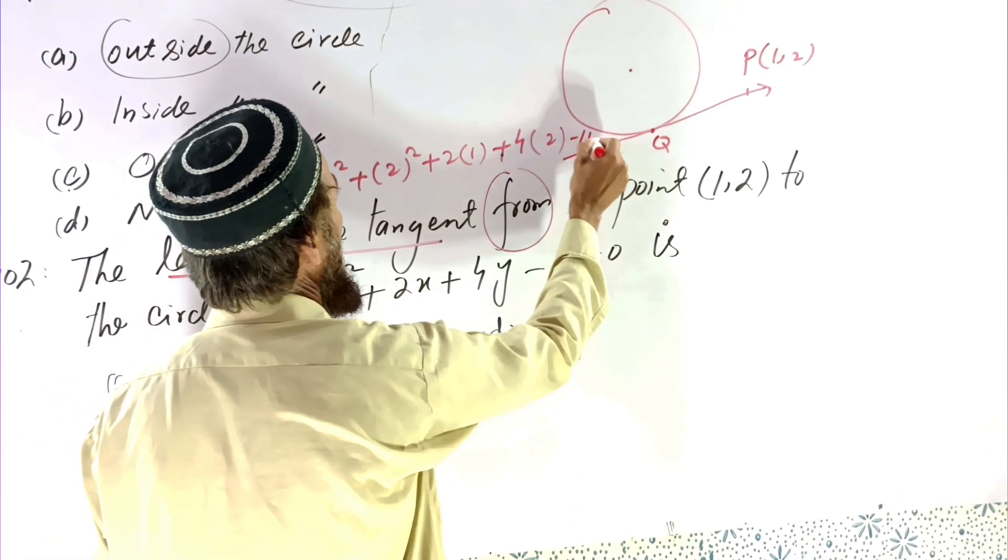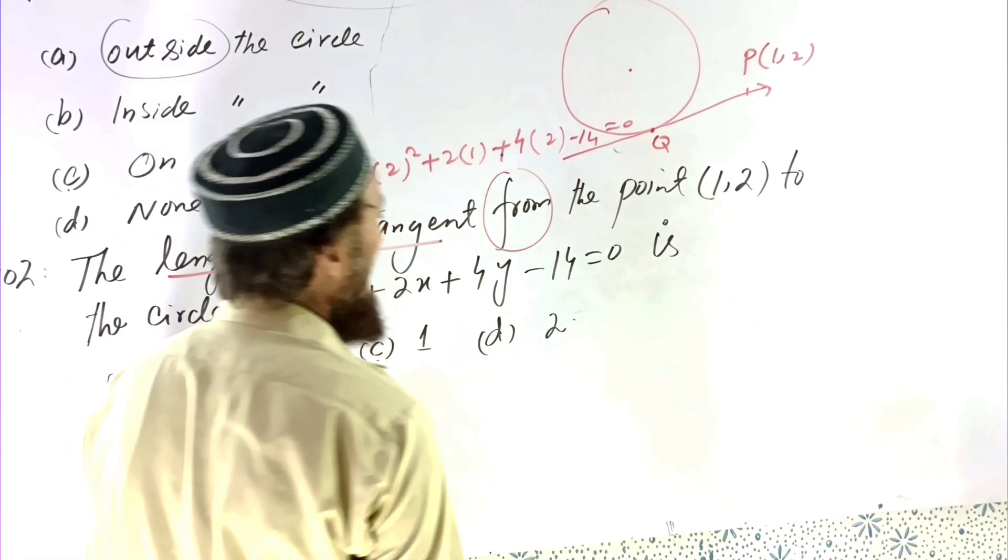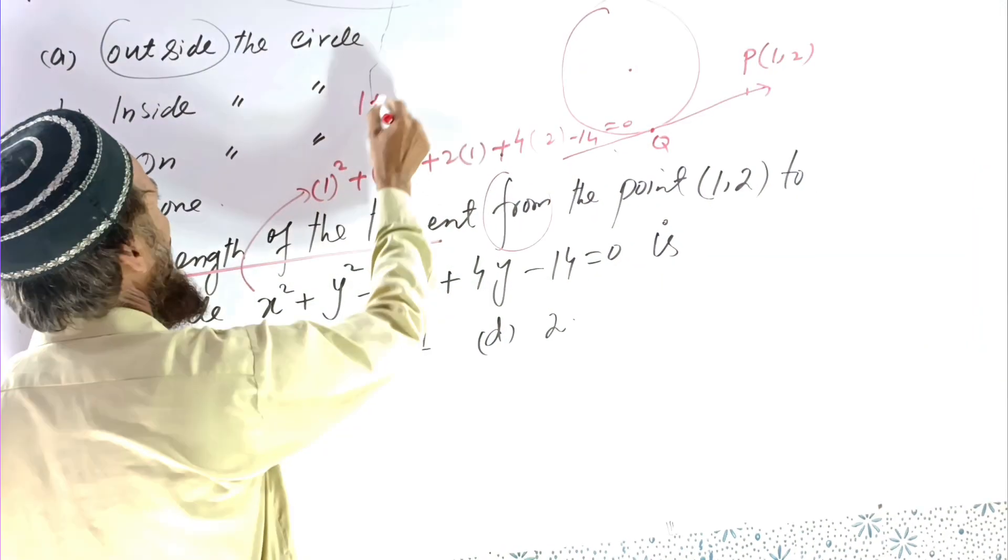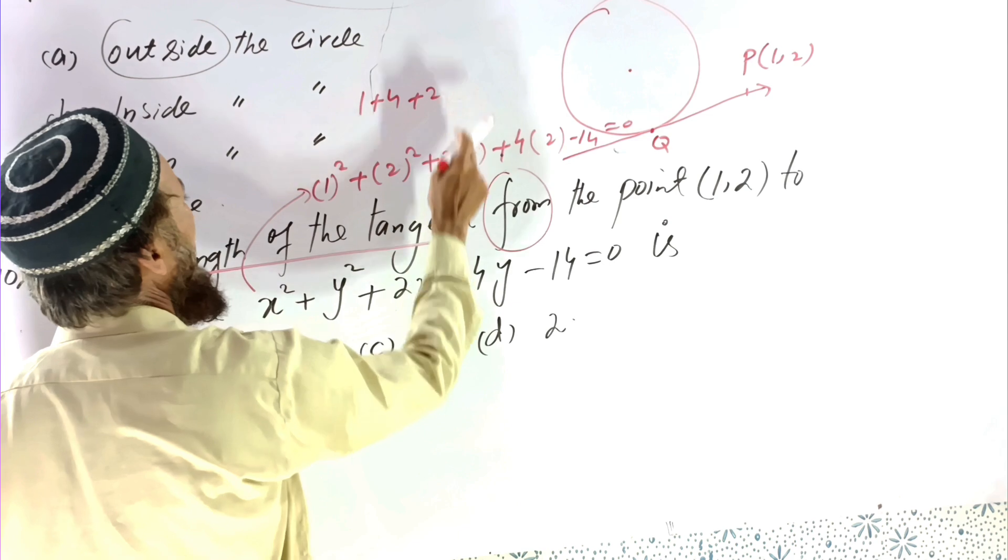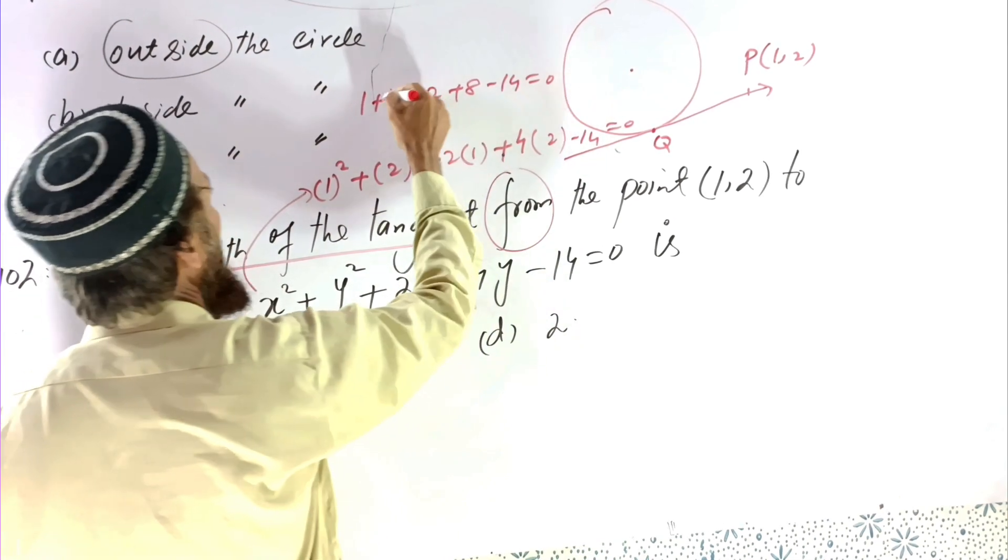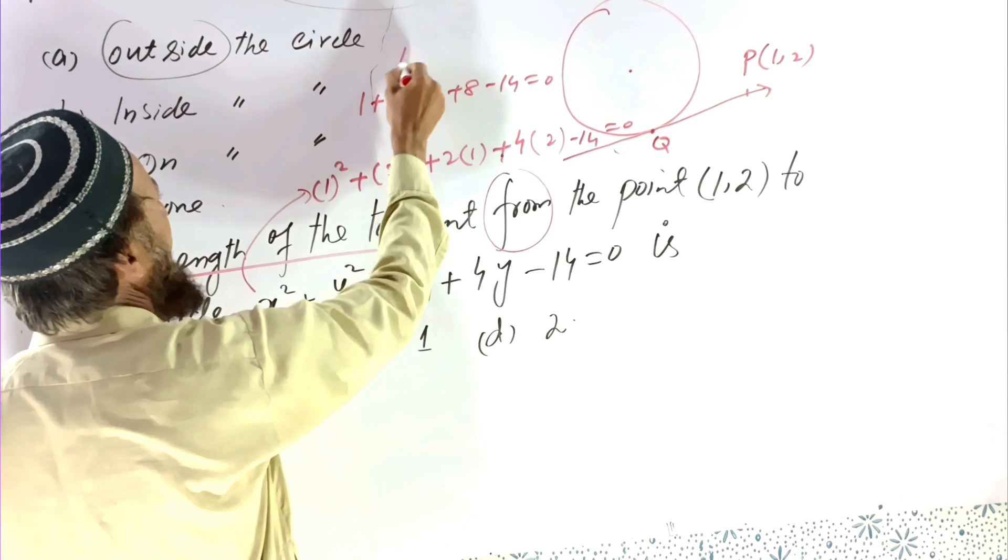So result will be equal to... if we calculate this, 1 + 4 = 5, 2 + 8 = 10, so 5 + 10 = 15. We get here 15 minus 14.